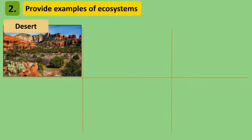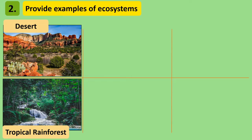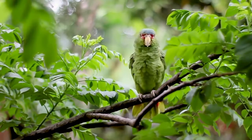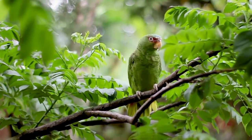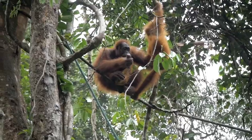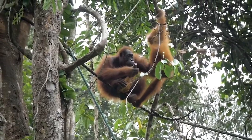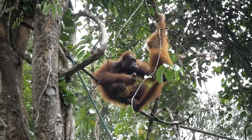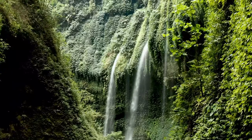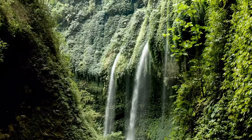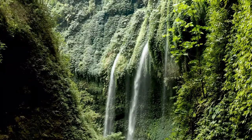Tropical rainforests are dense areas of forest where temperatures are hot. But because lots of rain falls here, it means rainforest ecosystems have the most diversity of living things on earth. The Amazon rainforest is the world's largest tropical rainforest.